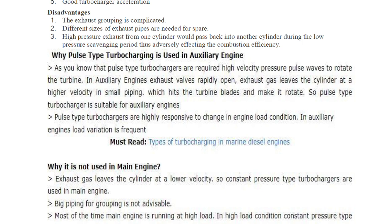A common exam question: why is pulse type turbocharger used in auxiliary engines? The pulse type turbocharger requires high velocity pressure pulse waves to rotate the turbine. In auxiliary engines, the exhaust valve rapidly opens, exhaust gas leaves the cylinder at high velocity through small piping which hits the turbine blades and makes them rotate — making pulse type suitable for auxiliary engines.